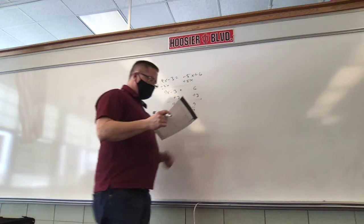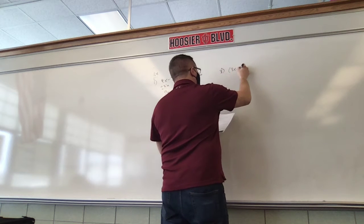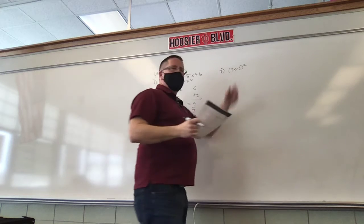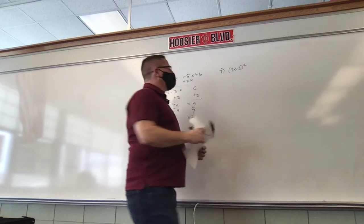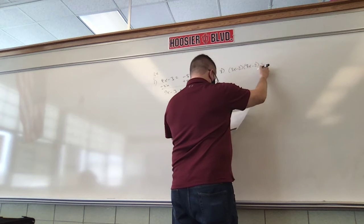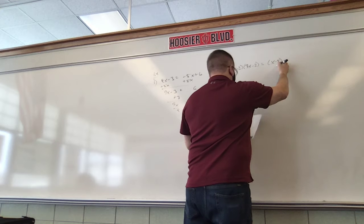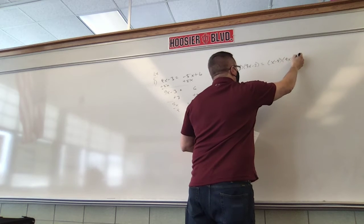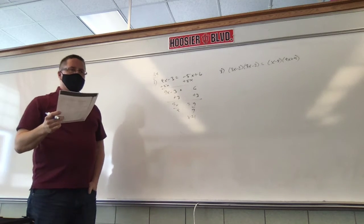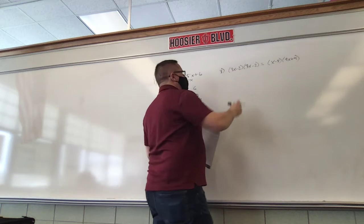Let's look at question number 3. Any thoughts on how we're going to do number 3? It says 3x minus 2 squared. When you square it, can I just square both of those? No. When you square something, it times itself. So we're going to get x minus 5 and x plus 4. How do we multiply 2 terms by 2 terms? FOIL. Okay, so we foil this thing out.